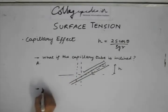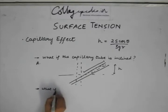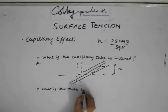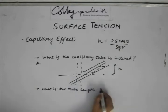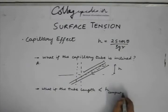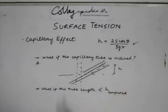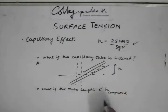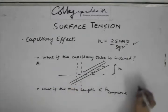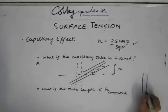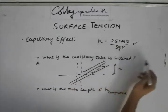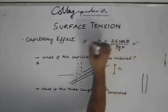Now, what if the tube length is less than the h which is computed by this formula? What if the length of the tube is less than this?